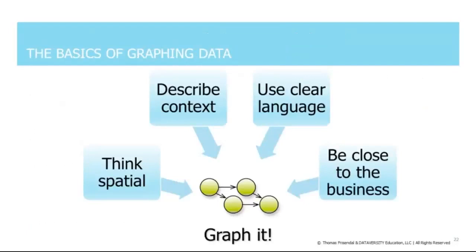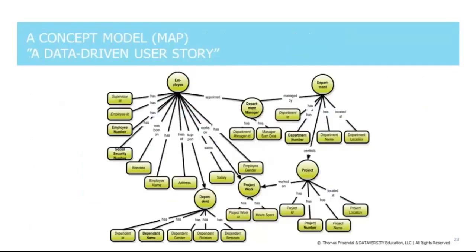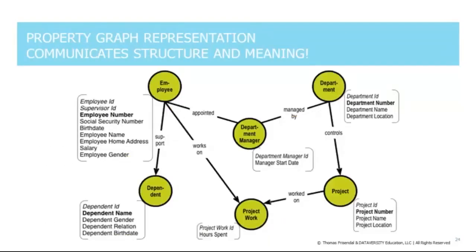First, you have to graph things — and to do that, you have to think spatial, describe context, use clear language, and be close to the business. I want data models to be close to the business and to be visual, intuitive, and easy to grasp. Here is a graph data model at the concept model level. We have nodes and properties, but it is also a graph by itself, and all relationships — even between nodes and properties — are visualized in this modeling example.